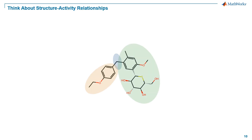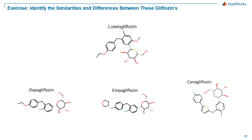Remember that any change in any of these three fragments will change the pharmacokinetics and pharmacodynamics of the new candidates. As an exercise, I want you to look at these other gliflozins, identify the three main components in them, and see the similarities and differences. For example, comment on how the linker in canagliflozin is different from the other two, or notice the chlorine and fluorine substitutions on the phenyl rings and think about what might be the reasoning behind them.